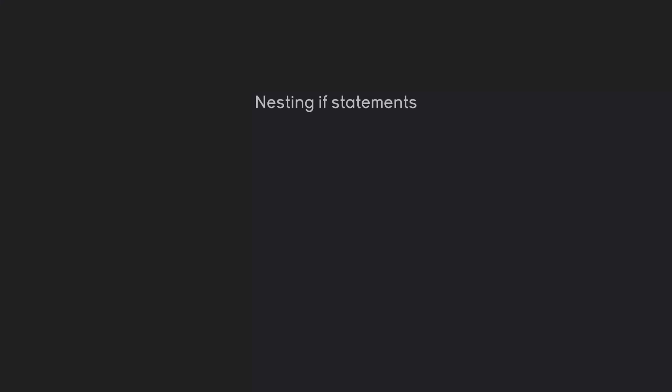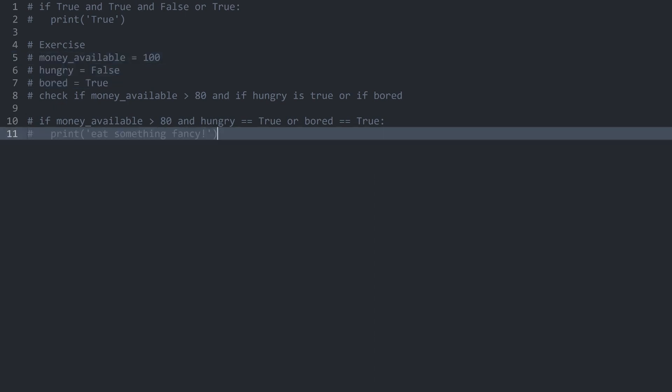The other way to make if statements more complex is by nesting them. For example, you could have an if statement — 'if A is inside of the list [A, B]' — and inside of that add another if statement indented by one level, and inside of that even another if statement. This system can continue indefinitely as long as you keep adding more indentation levels.